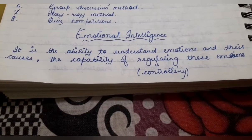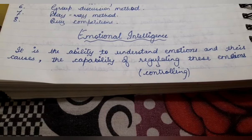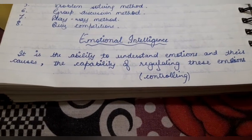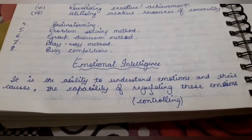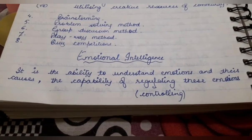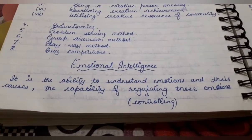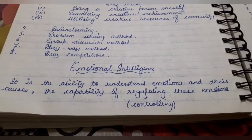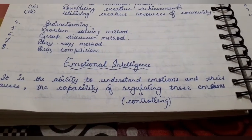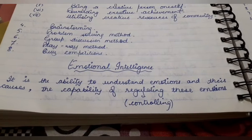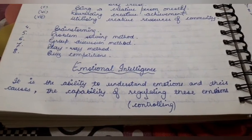Emotional intelligence is the ability to understand emotions and their causes, and the capacity of regulating these emotions. We say that some children are very emotional. So what is it? At which time we can show emotions? It is the ability to control our emotions. This is emotional intelligence.